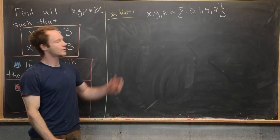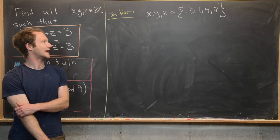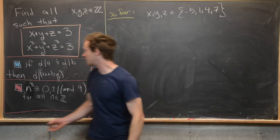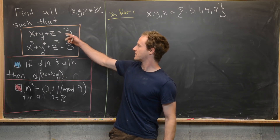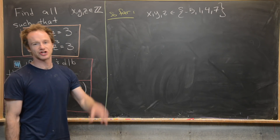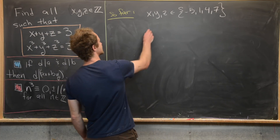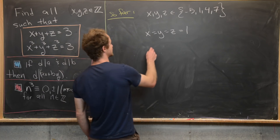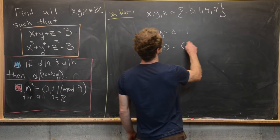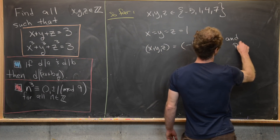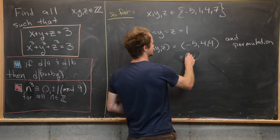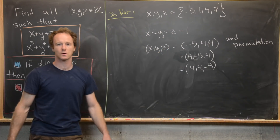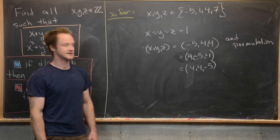With x, y, z restricted to the set {−5, 1, 4, 7}, we can guess and check which combinations give sum equal to three and sum of cubes equal to three. The only possibilities are: x equals y equals z equals one, and x, y, z equals negative five, four, four and its permutations — giving four total solutions. And that's a good place to stop.